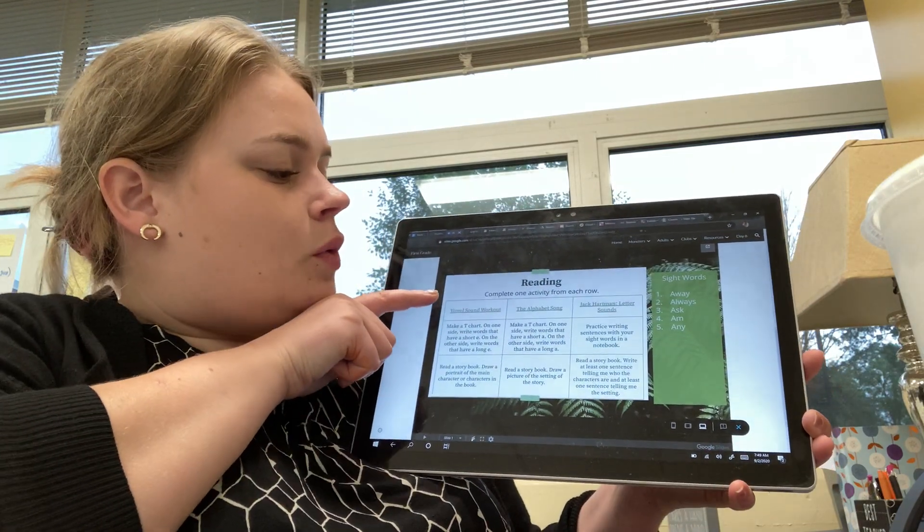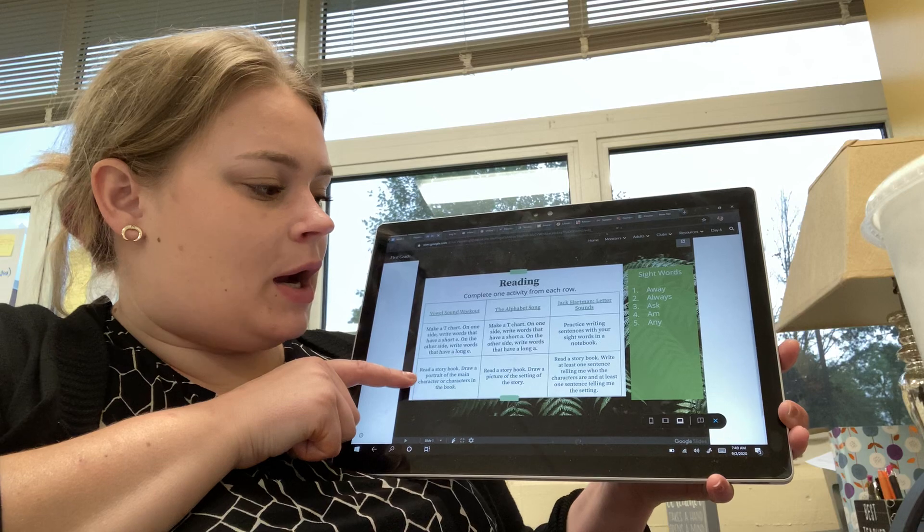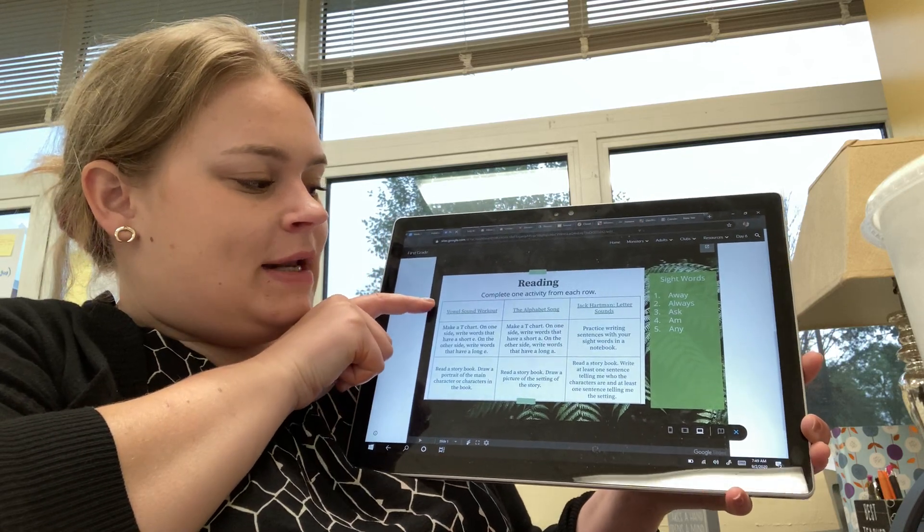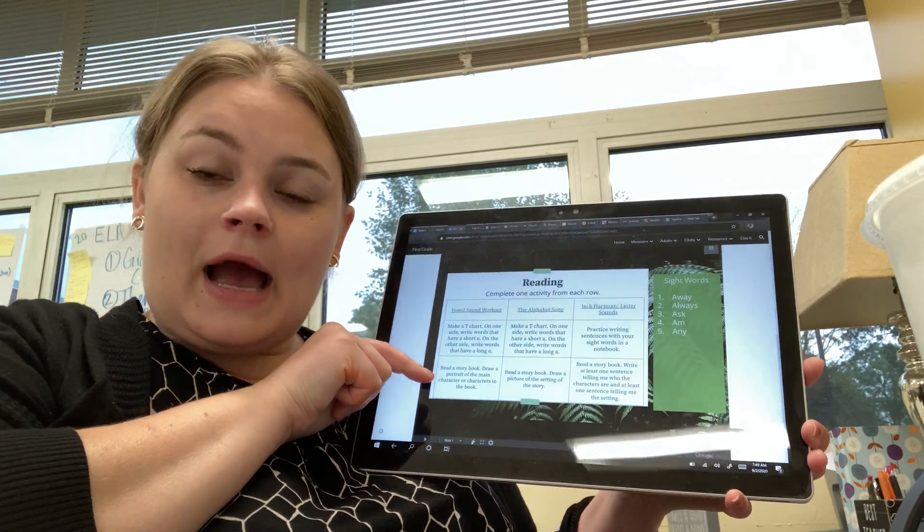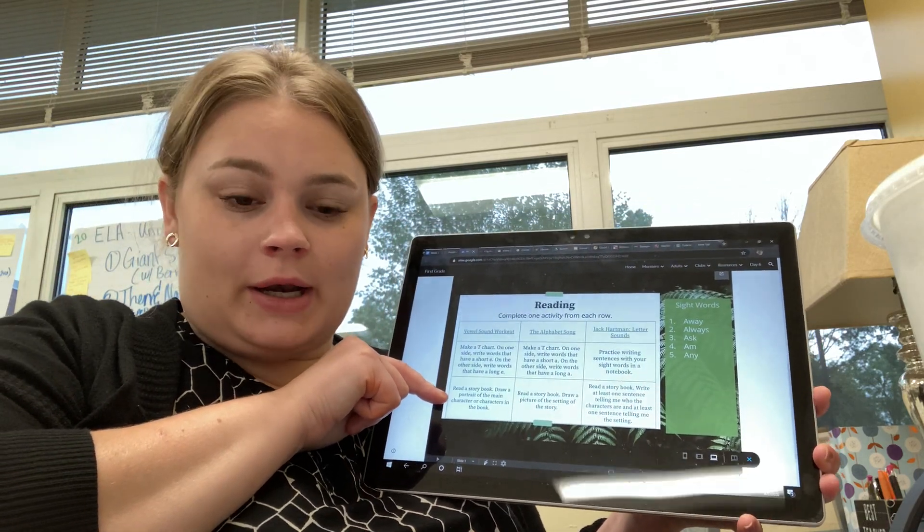Remember, you're going to choose one thing from each row. So, this should take five minutes. This should take ten minutes. This should take fifteen minutes. I'm going to show you how to make a T-chart now.